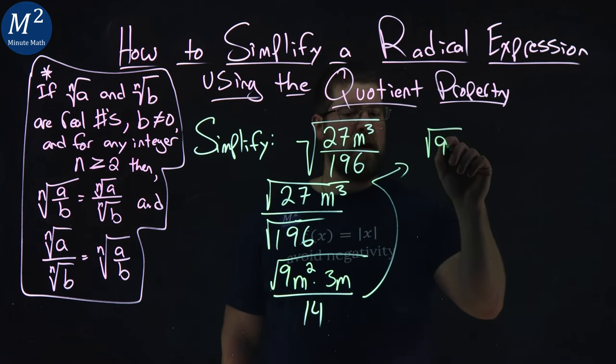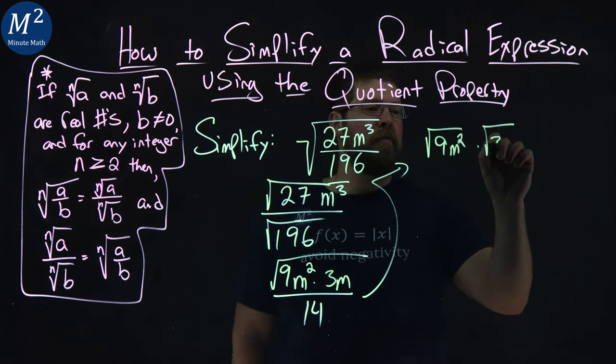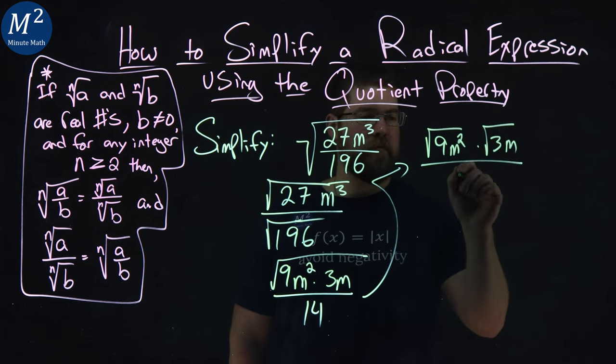We have the square root of 9m squared times the square root of 3m all over 14.